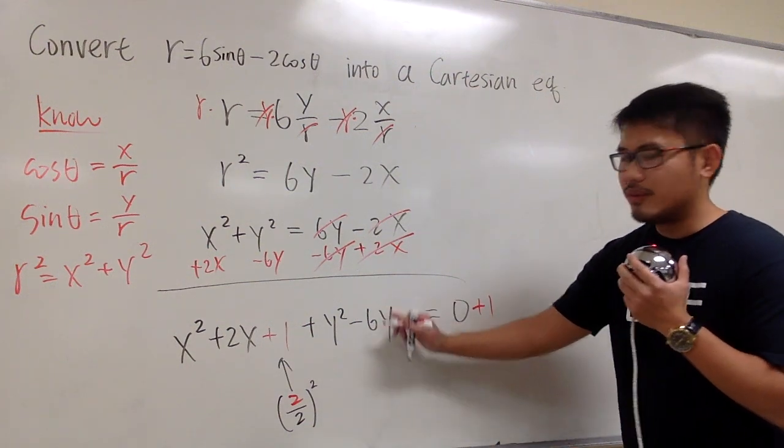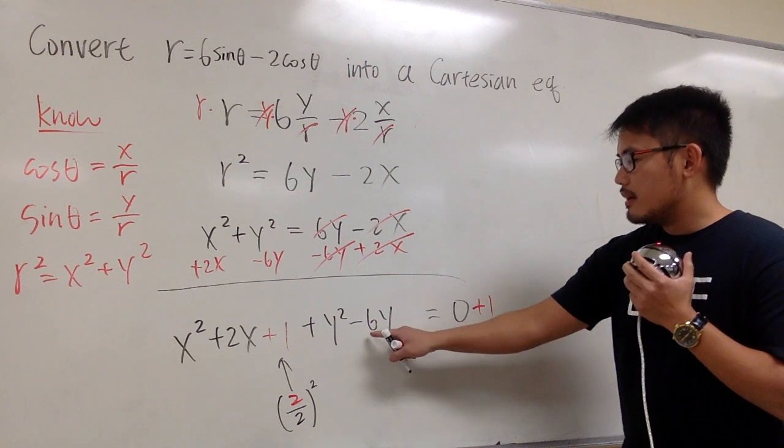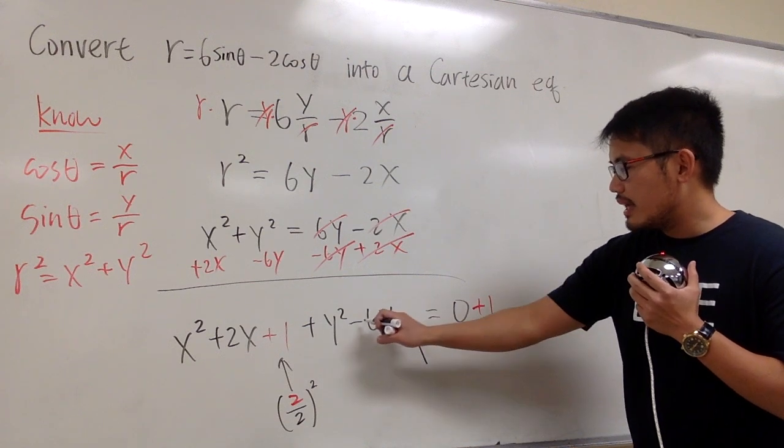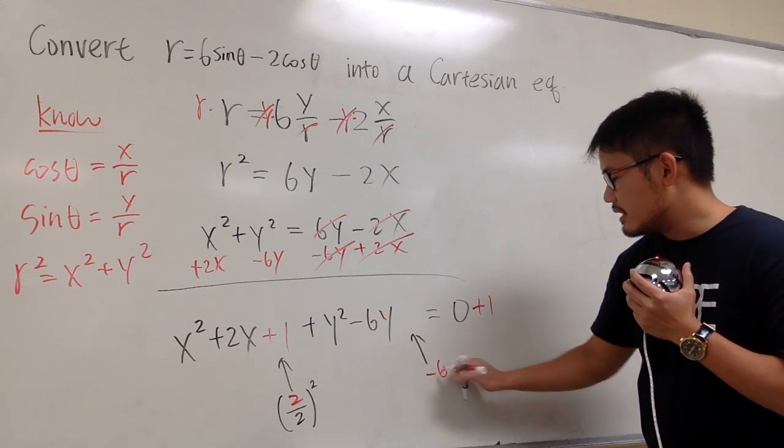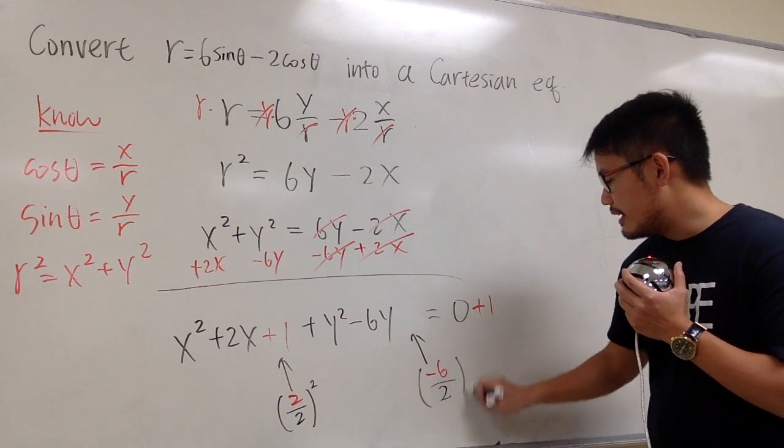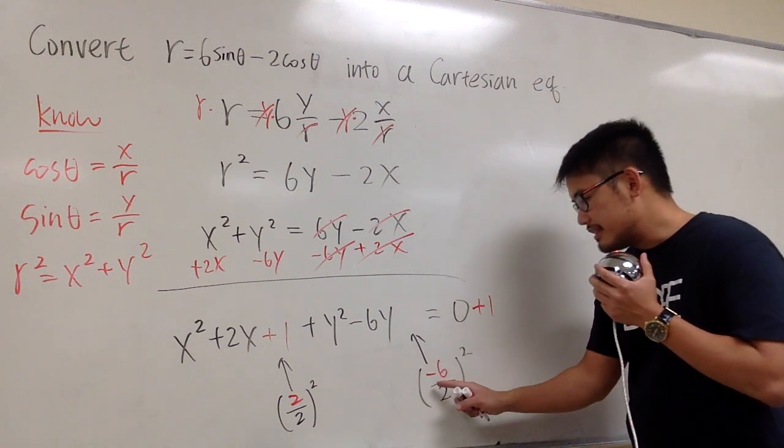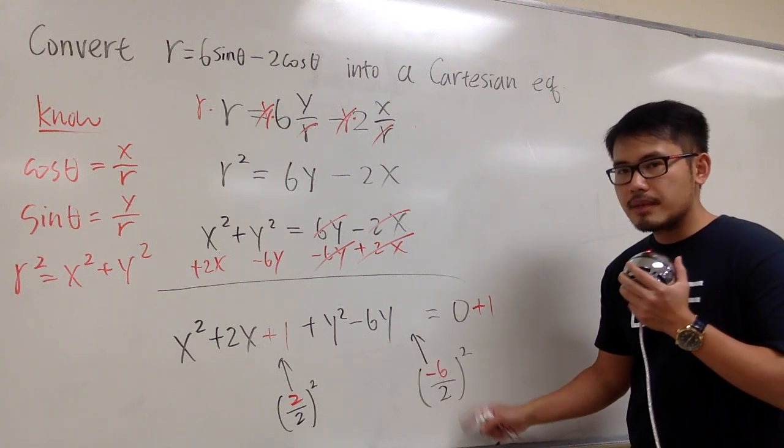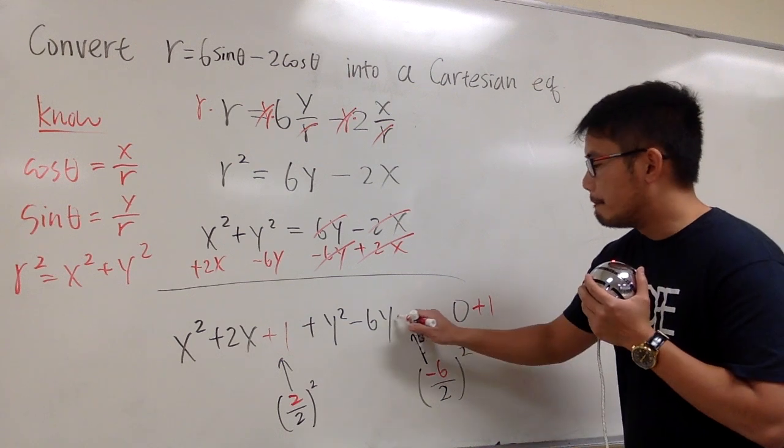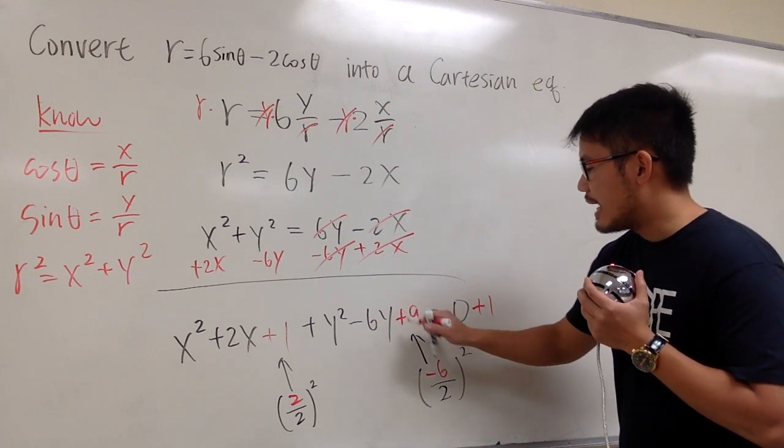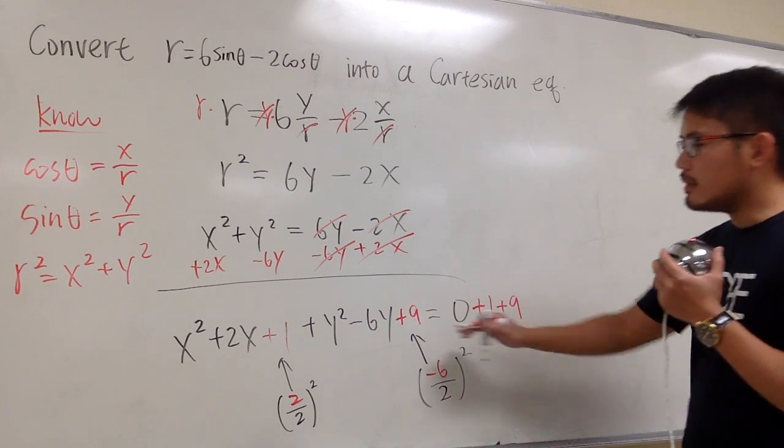And then, let's also complete the square for the y. So, I'm going to look at this number, which is negative 6 divided by 2, and then square that. Negative 6 divided by 2 is negative 3. You square negative 3, you get positive 9. And you add 9 on both sides.